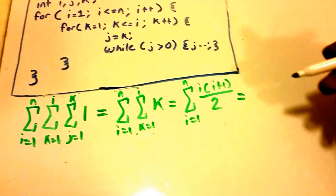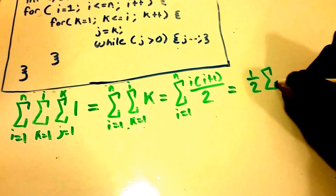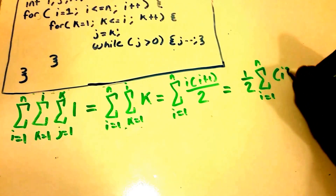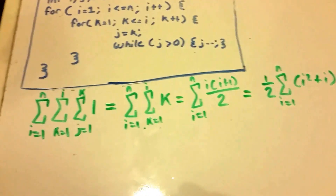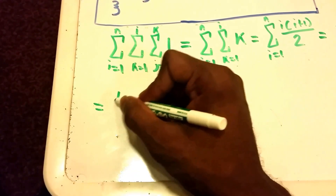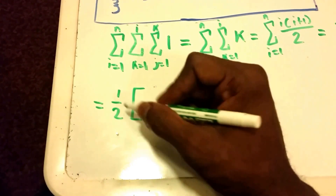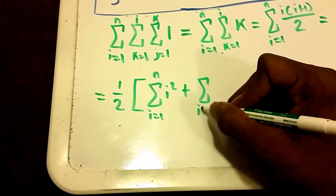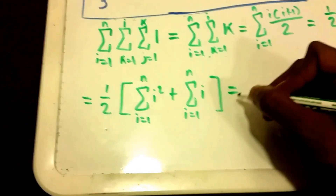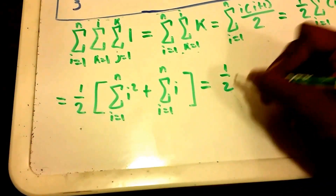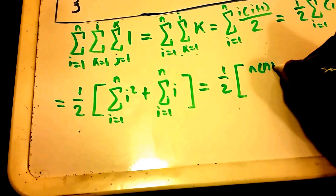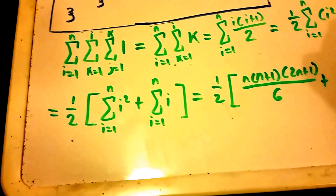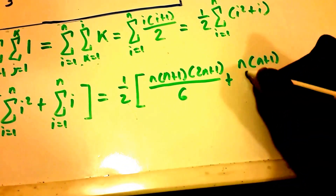Now we're going to do some summation manipulation. I'm going to bring out the constant 1/2, so it becomes 1/2 times the summation from i equals 1 to n of i squared plus i. Then we split up the summations: 1/2 times the summation from i equals 1 to n of i squared, plus the summation from i equals 1 to n of i. This becomes 1/2 times [n(n+1)(2n+1)/6] plus [n(n+1)/2].